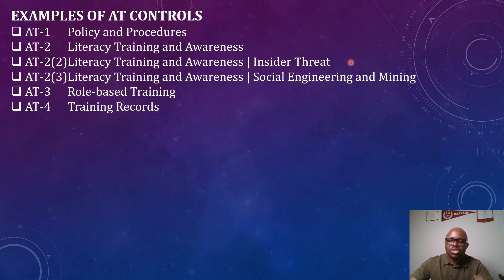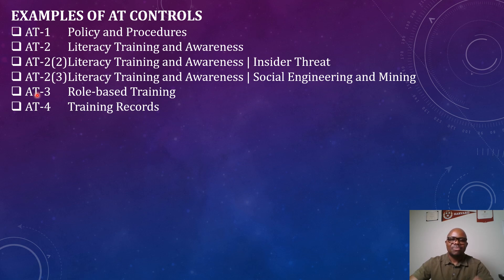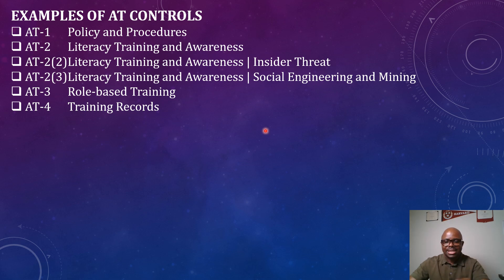AT-2 Enhancement 2 addresses insider threats — train employees about insider threats. AT-2 Enhancement 3 covers social engineering and phishing. AT-3 is role-based training, meaning every role — system administrators, network administrators, database administrators, security administrators — must be adequately trained to understand their specific roles, tasks, and duties, ensuring segregation of duty.